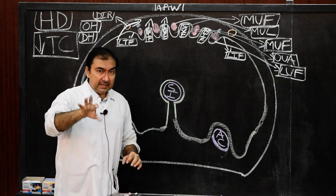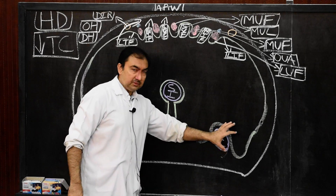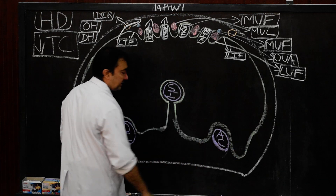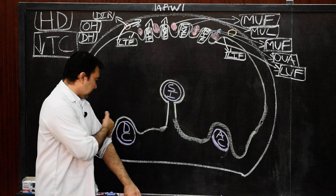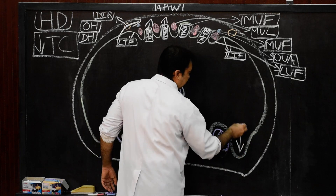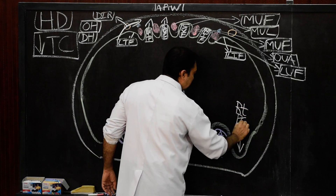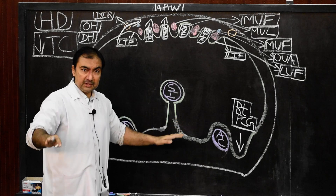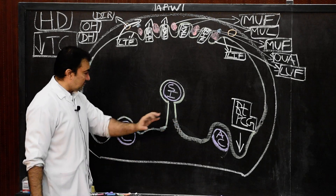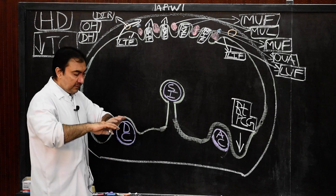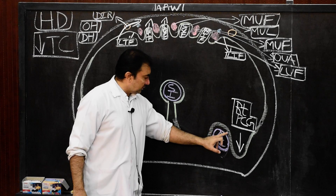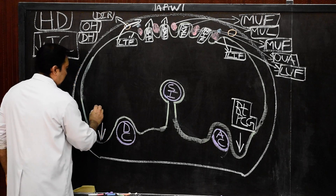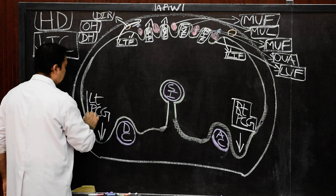The peritoneum covers the ascending colon on the right side and descending colon on the left side in such a way that on the sides of these two structures it will form the paracolic gutters. The right paracolic gutter is formed by the horizontal disposition of the peritoneum covering the ascending colon on the right side. It covers from the front and also covers the sides of the ascending and descending colon.